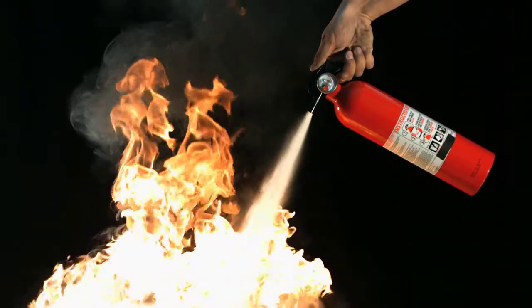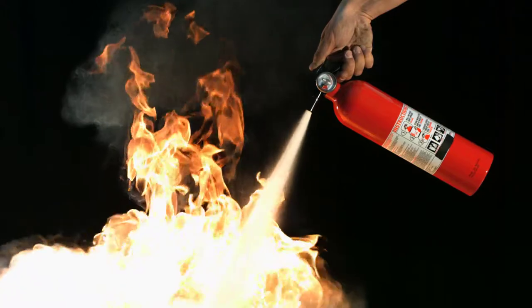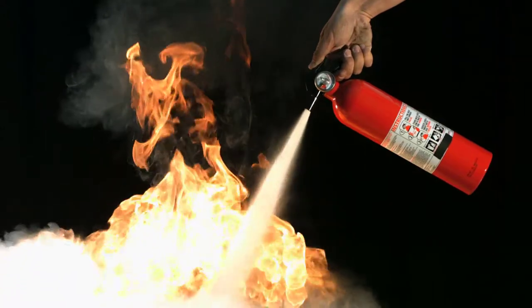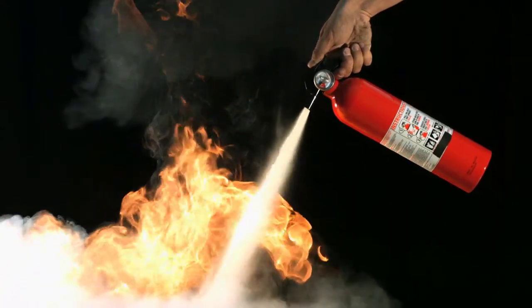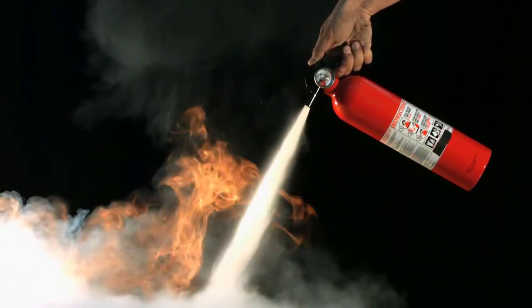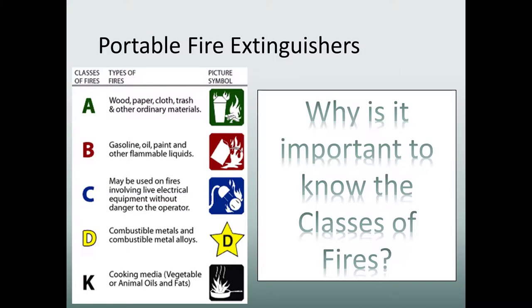We'll now talk about the different classes of fire: Class A, B, C, D, and K. Class A is basically trash, wood, and paper.